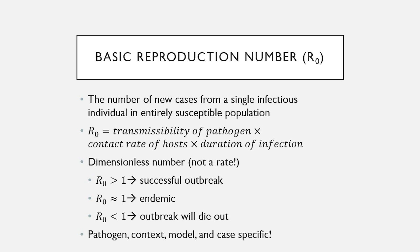Another way to think about this mathematically is to think about R0 as a tipping point. If R0 is greater than 1, we expect the disease to spread and for there to be an outbreak. If it is equal to 1, then the disease is what we call endemic — spreading consistently in a population without really taking off, averaging to 1 more person per single infected individual. Finally, if R0 is less than 1, we would expect the outbreak to die out. It's really important to note that R0 is specific to the pathogen, its context, and the mathematical models used to derive it.